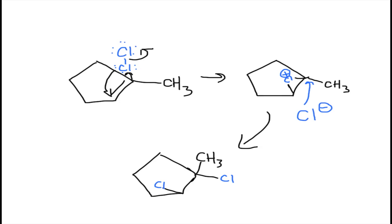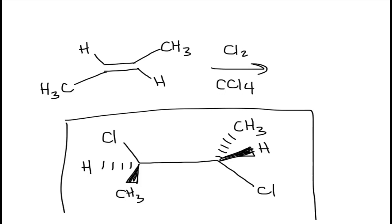Let's do one more example. If you look at this reaction, you have a trans molecule and you add Cl2. You're going to end up with the chlorines anti to one another. It's also important to keep the other configurations the same — the CH3 groups were trans to one another before, so as you can see, one is pointing at you and one is pointing away from you, keeping the configuration the same. This is a stereospecific reaction, so the stereochemistry is really important.